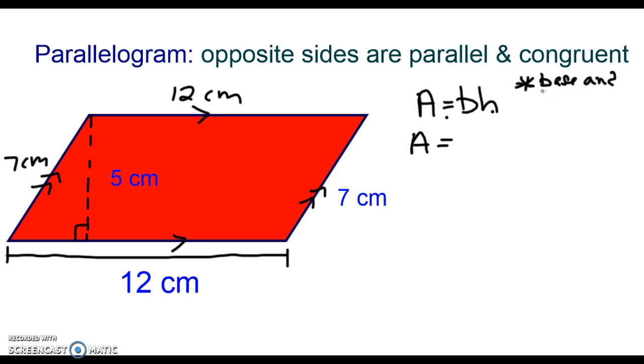Base and height must form a right angle. So they must be perpendicular to each other. They must form a right angle. Otherwise, they are not your base and your height. And the base has to be a side of the shape. So I have to use this side length here, the 12 centimeter side length, as my base, because that's where the right angle is being formed with the height.